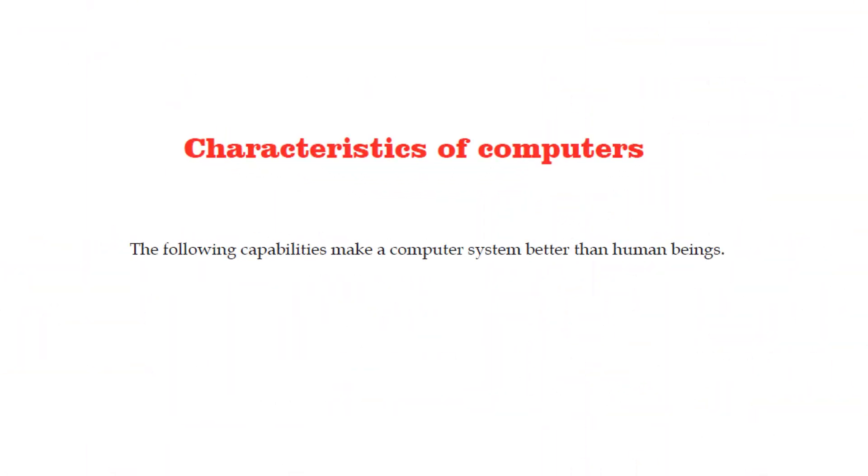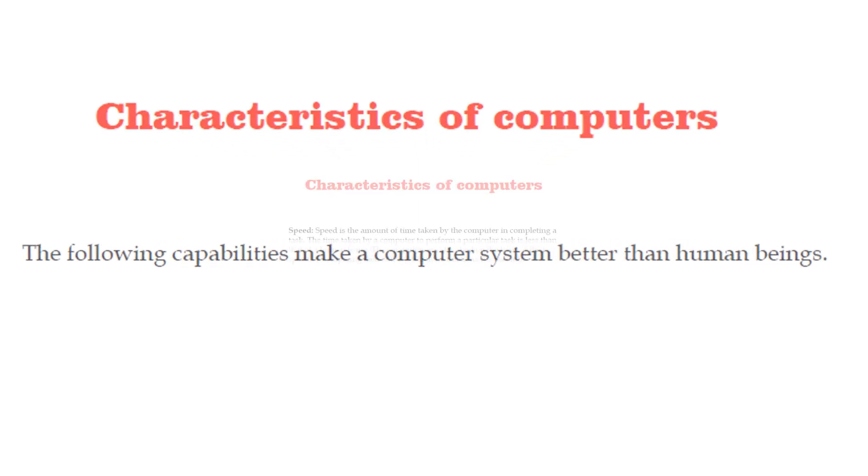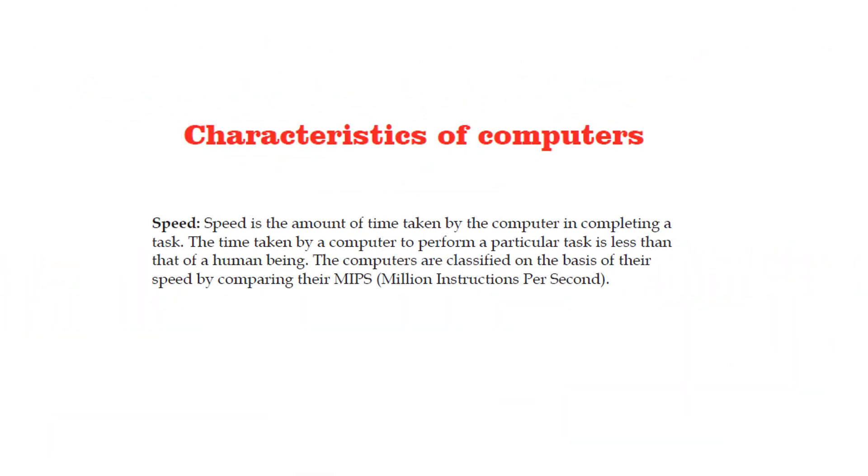Let's talk about the characteristics of computers. What we will be discussing here are the capabilities of a computer system that makes it better than human beings. First is speed. Speed is the amount of time that is taken by a computer in completing a task. The time taken by a computer to perform a particular task is less than that of a human being. The computers are actually classified on the basis of the speed by comparing their MIPS or million instructions per second.